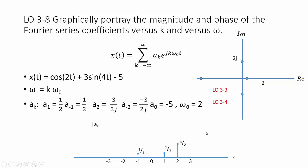Notice that magnitudes are always positive. For k equals negative 2, we again bring j up to the numerator, making the value positive 3 halves j, placing it on the positive imaginary axis at a distance of 3 halves from the origin — magnitude 3 halves. When k equals 0, the value is negative 5, located far to the left on the real axis. Even though the value is negative 5, the magnitude is the distance from the point to the origin, which is positive 5. All other a sub k are 0, so their magnitudes are all 0.